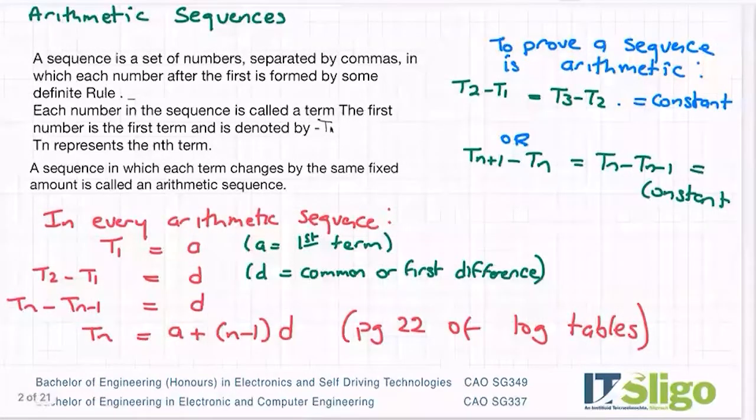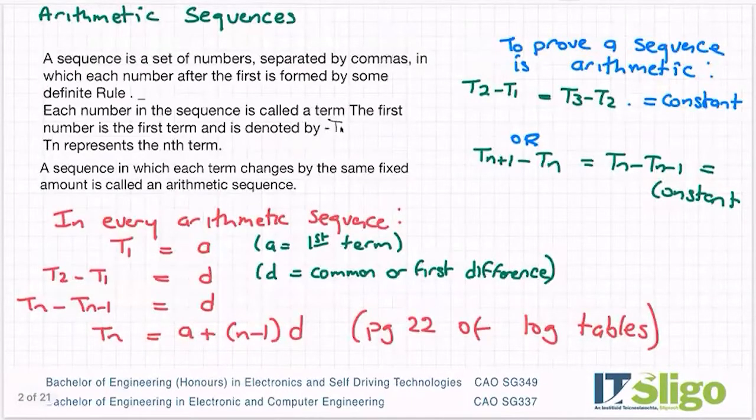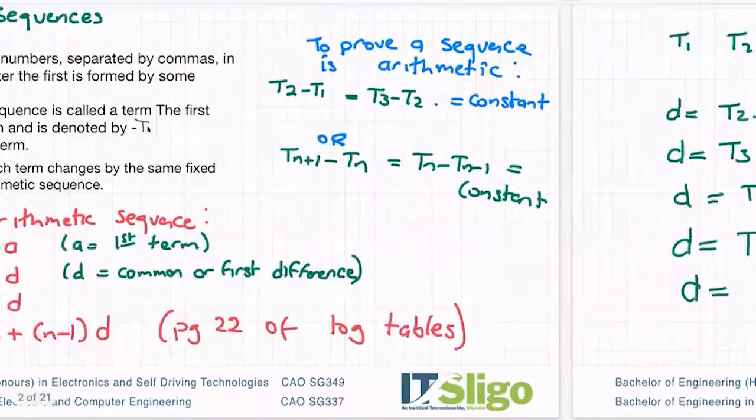So in other words, this value, the common difference is the same between them all. And that's how you prove a sequence is arithmetic.